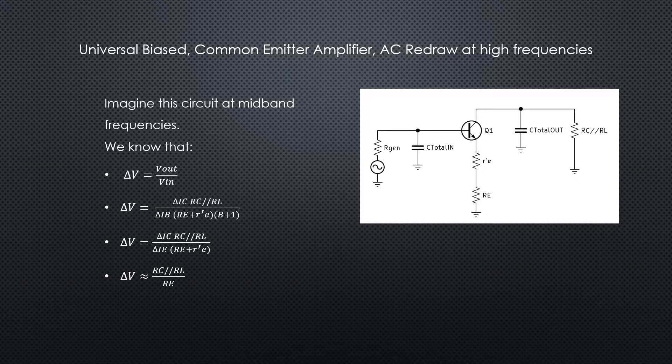We can derive vout and vin and put that in terms of ic times rc in parallel of rl and ib times the equivalent resistance at the base, which is re plus r prime e brought across the beta barrier, so we're multiplying by a factor of beta plus one.